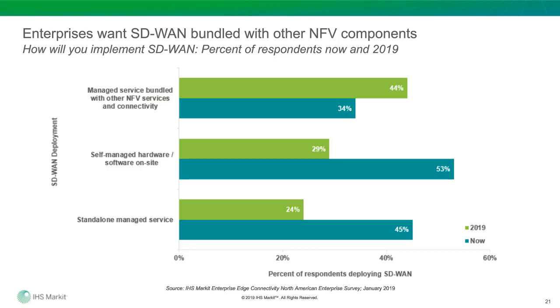We asked enterprise respondents how they'd like to consume SD-WAN going forward. Today it's a mix of standalone managed service or self-managed hardware and software on-site. By 2019, respondents want to move away from those two options toward a managed service bundle that includes other services such as web application firewall, security services, load balancing, and connectivity. As the market matures, enterprises want their choice of services bundled with SD-WAN.